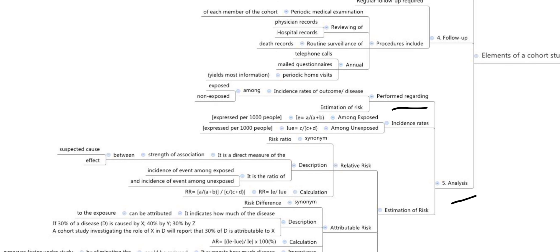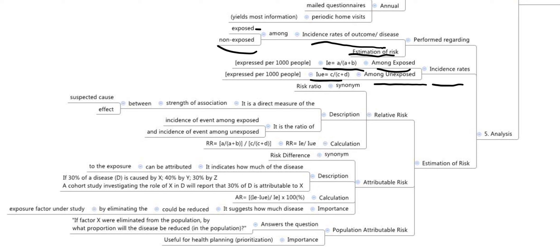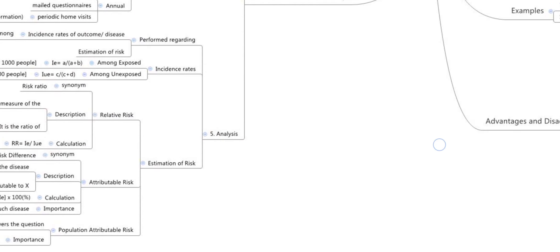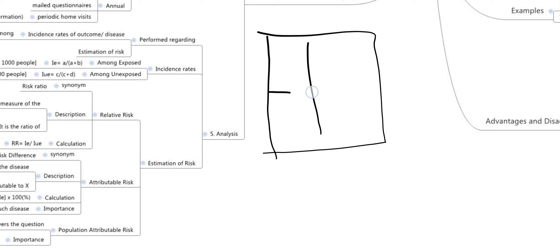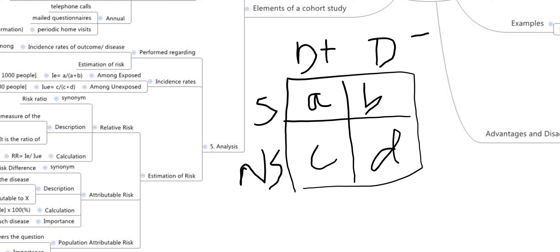The last step is analysis, which is performed regarding the incidence rates of the outcome or disease among exposed and non-exposed, and estimation of risk. The incidence rate among exposed is calculated as: IE = a / (a + b), expressed per thousand people — incidence rate being the number of new cases by total number of people. Among unexposed, it is: IUE = c / (c + d). To understand what a, b, c, and d represent, we refer to the two-by-two table.